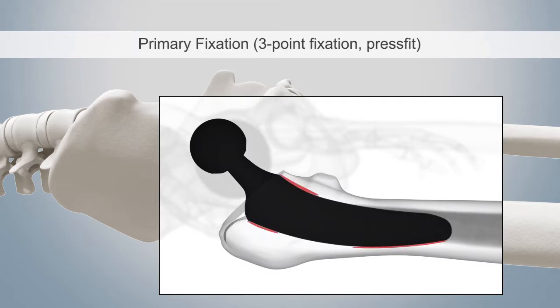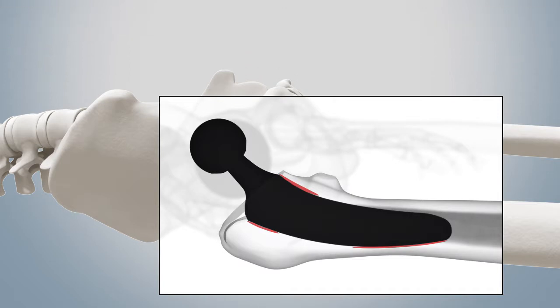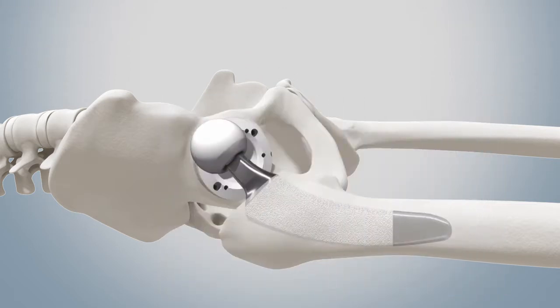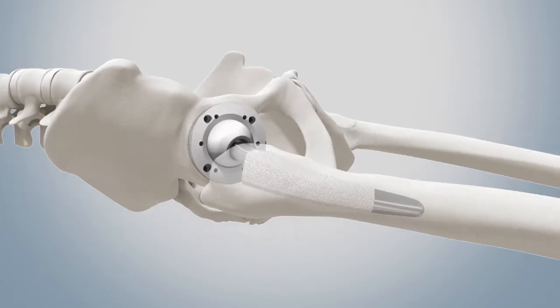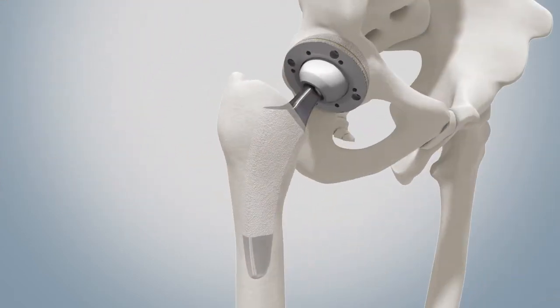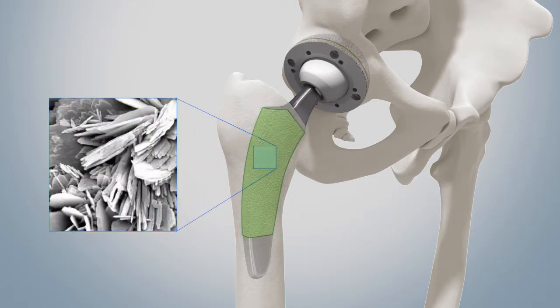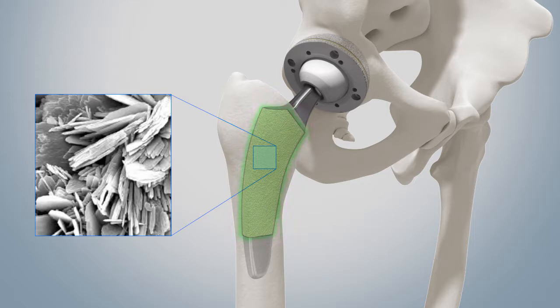However, the primary anchoring alone is not sufficient to ensure long-term stability and thus a long service life of the implant. The calcium phosphate coating, so-called bone eat, serves to stimulate ongrowth of the bone onto the prosthesis. This process begins as early as the first week after surgery and provides so-called secondary stability when completed after about 12 weeks.